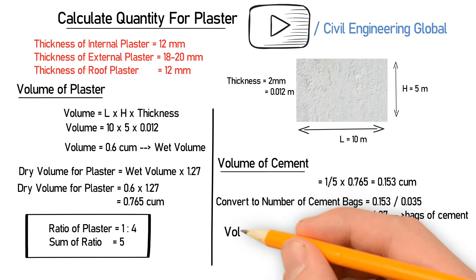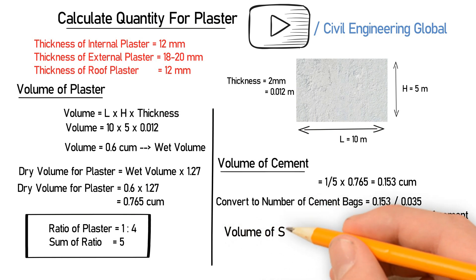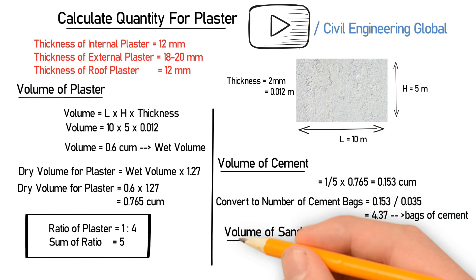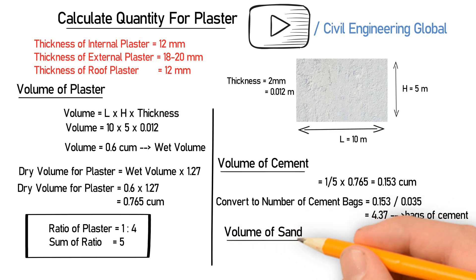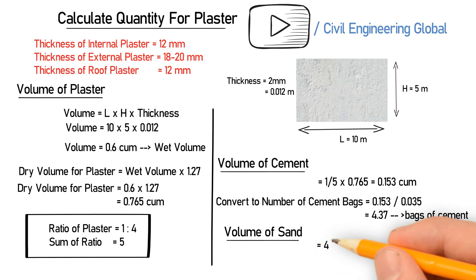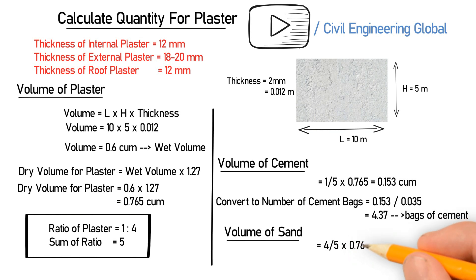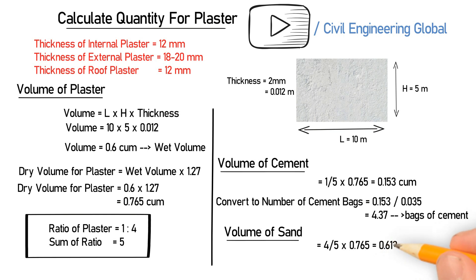Now let's calculate the volume of sand. In the ratio, the sand value is 4, so: (4 / 5) × 0.765 = 0.612 cubic meter. We will need 0.612 cubic meter of sand for this plaster.